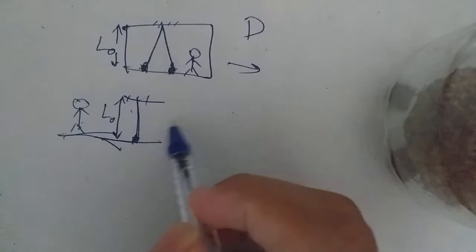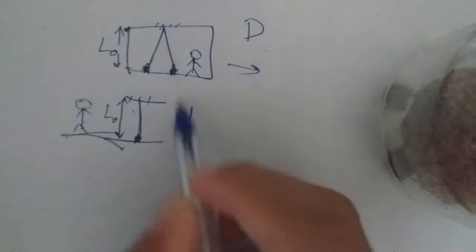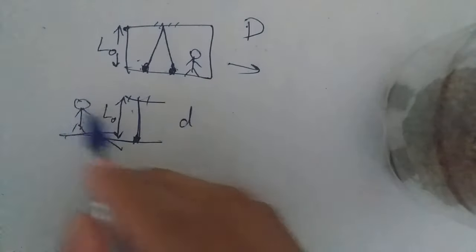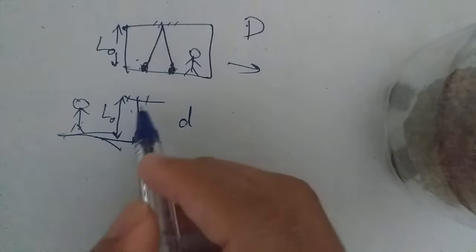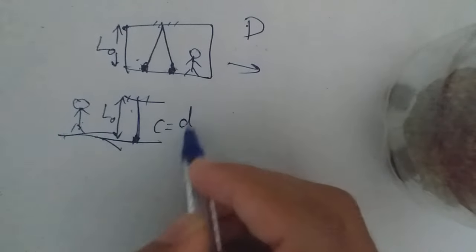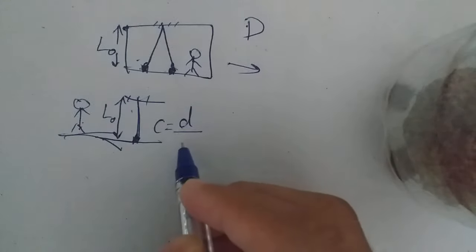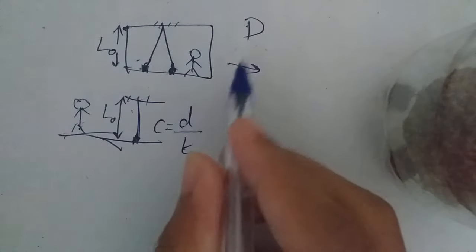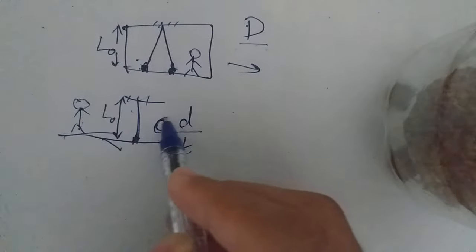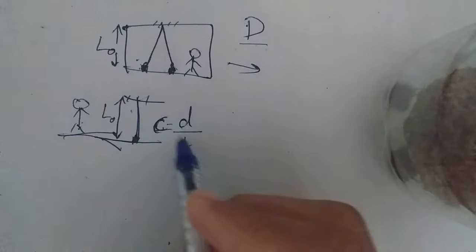Now, I am going to get the distance here. The velocity of light: C is the distance by time. The time is the same — the distance by time is the same issue.